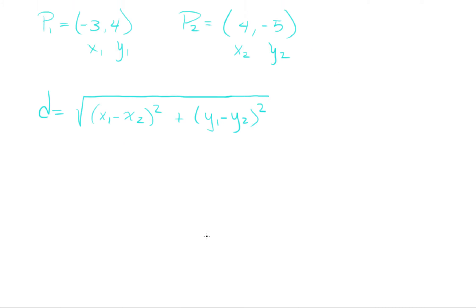So now let's plug in the numbers. x1 is −3, so −3 minus x2, which is 4, squared.